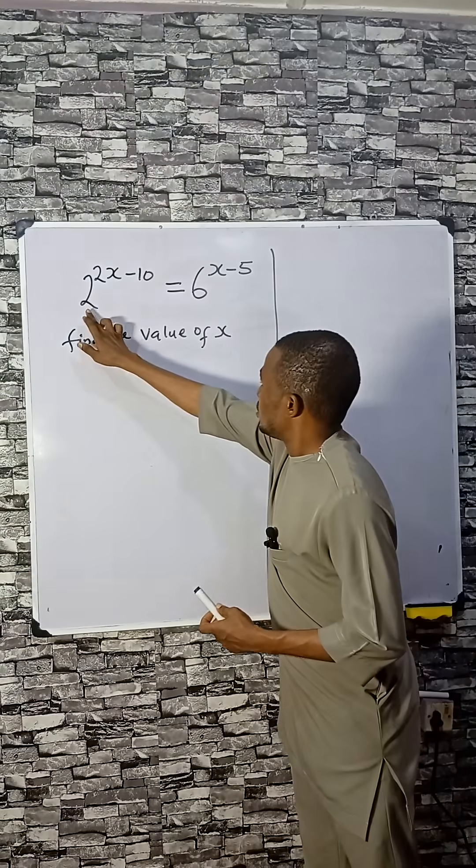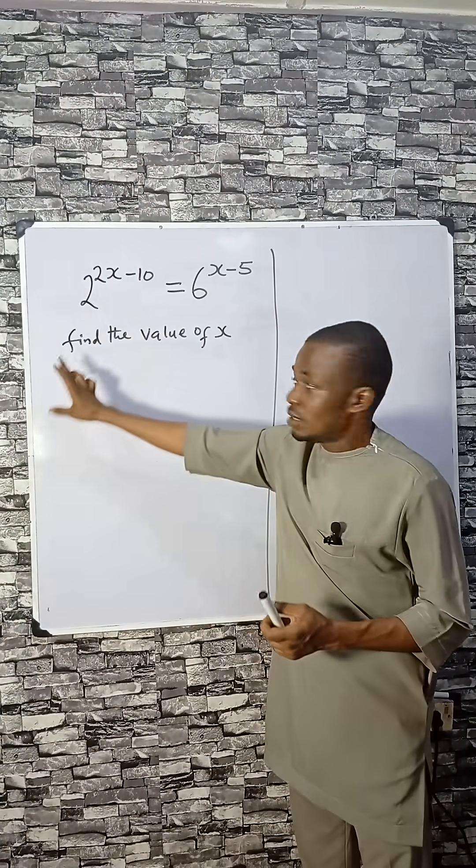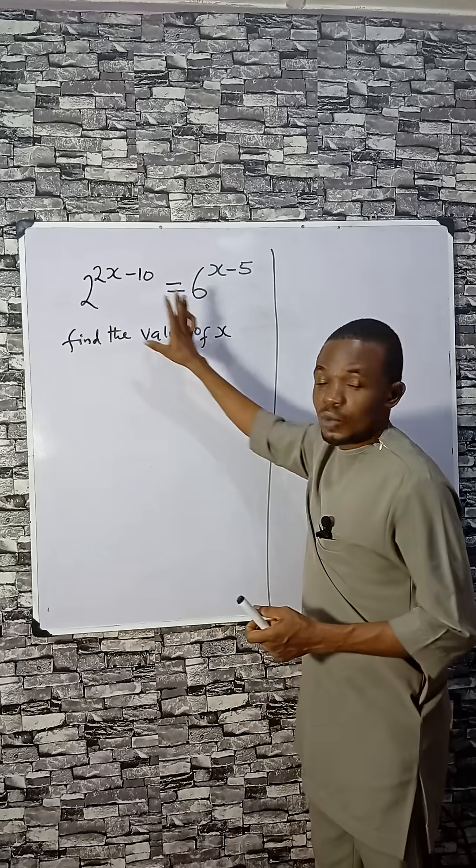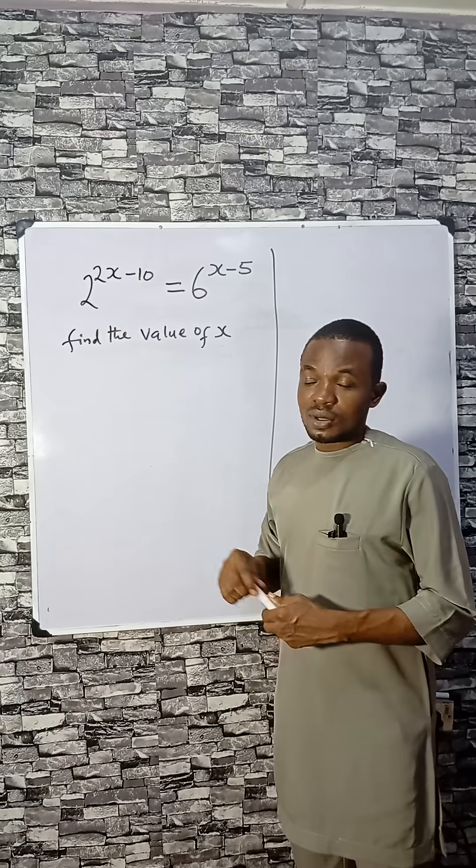Even when the bases are different - this is 2 and this is 6 - we can still find the value of x. So let's do this together.